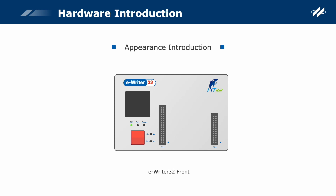Next, the names of the eWriter32 hardware components are introduced in detail. LCD: The eWriter32 provides a simple LCD display interface to display programming information and settings. Using two function keys named SET and ADJ, users can switch the information pages to display programming file name, checksum, software version, and so on.